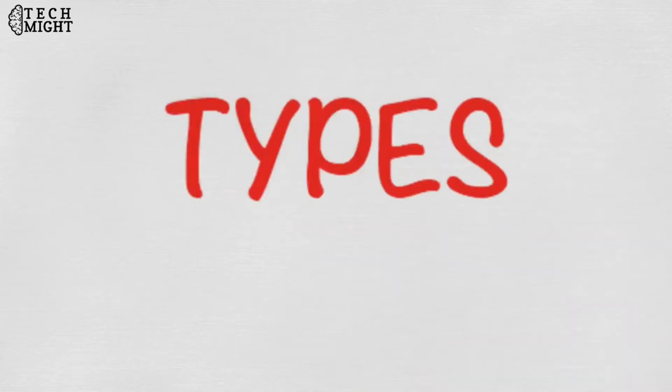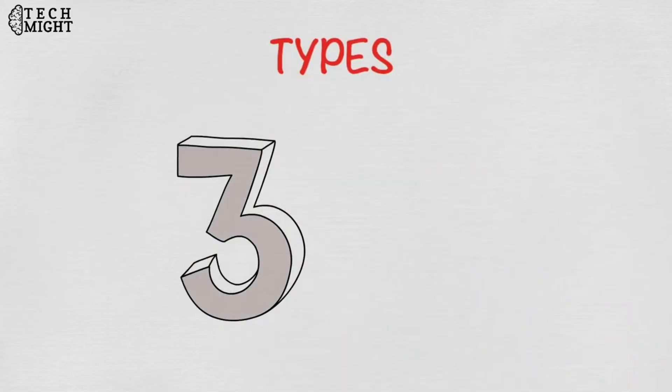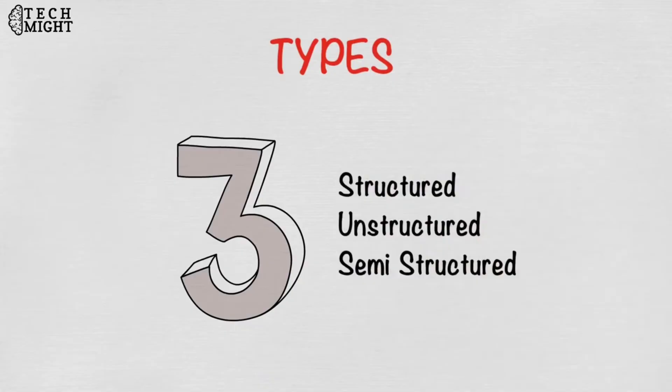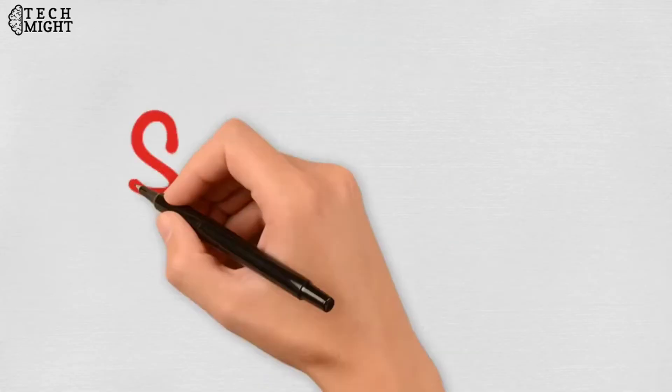Let's look at some types of big data. There are mainly three types of big data. One, structured. Two, unstructured. Three, semi-structured. Let's see what is structured big data.